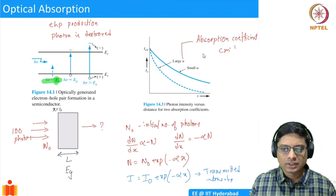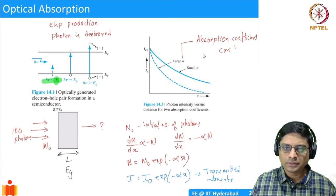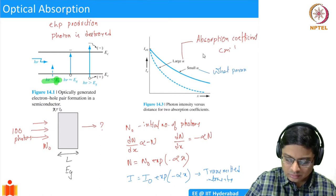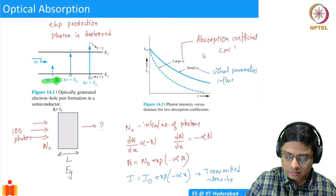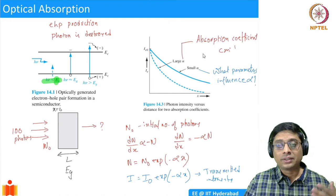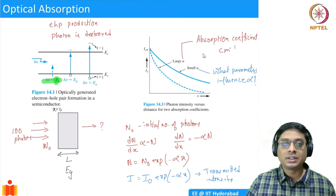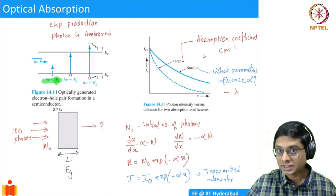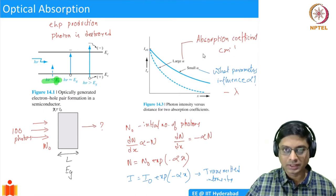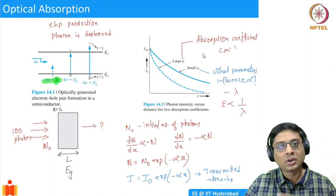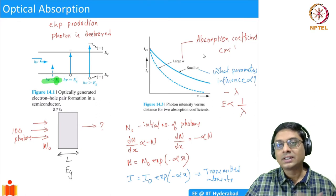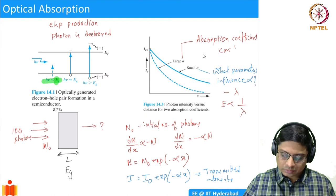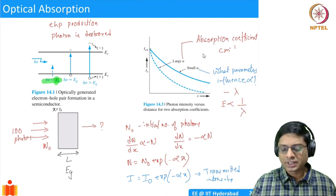Is α a fixed quantity per material, or what parameters affect it? α is definitely wavelength dependent. If the wavelength is shorter, the photon energy is larger than Eg and it gets absorbed. If the wavelength is longer, the photon energy is smaller than Eg and it gets transmitted. So α depends on λ — and indirectly on the band gap.